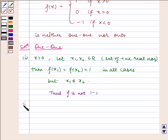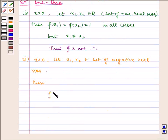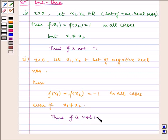Now the second case: x is less than 0. Let x₁, x₂ belong to the set of negative real numbers. Then f(x₁) equals f(x₂) equals minus 1 in all cases, even if x₁ is not equal to x₂. Thus f is not one-to-one.